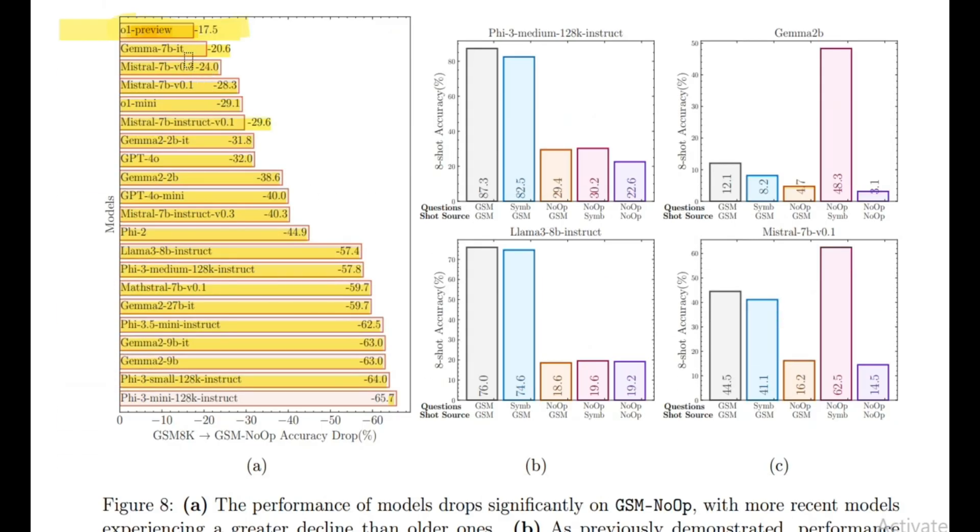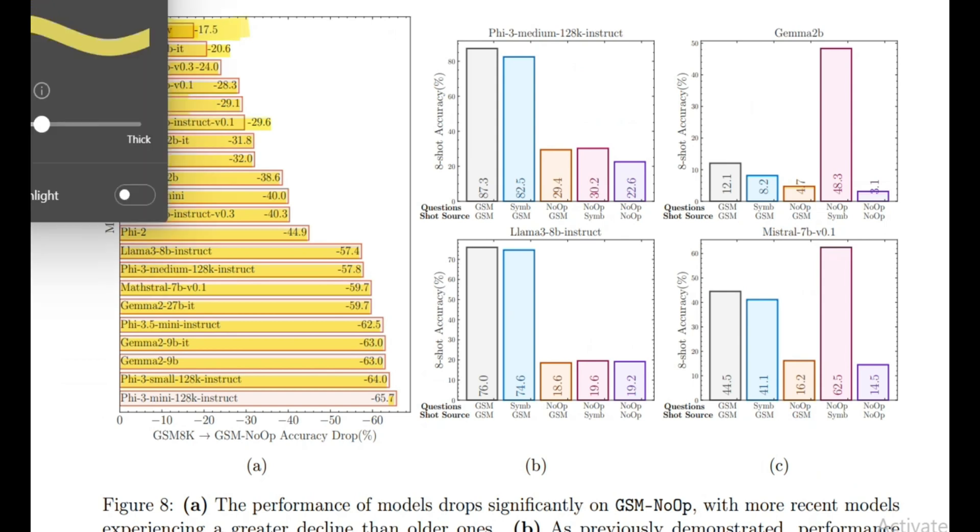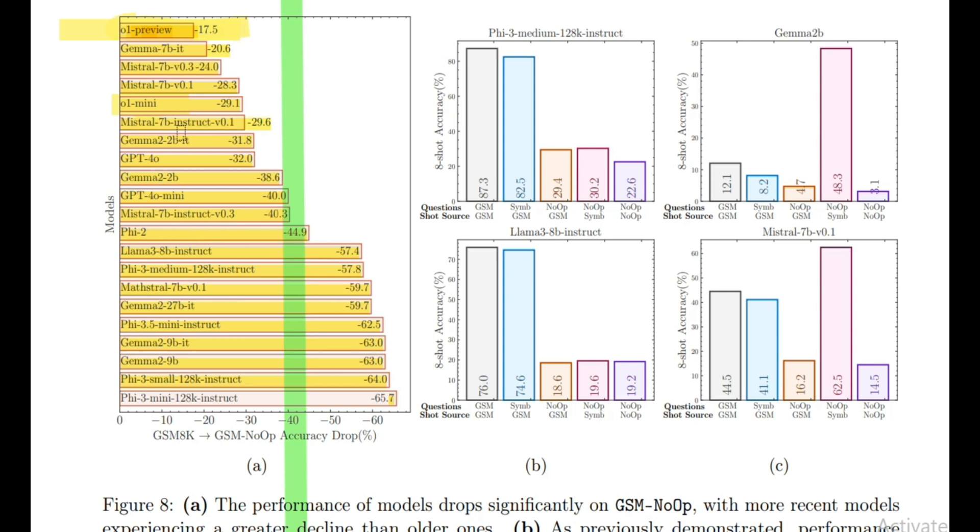And what's crazy about this is that we see a similar performance drop for GPT-40-01-mini. We can see 01-mini's drop is at 29%, and GPT-40's is at 32%. 01-preview does do better at 17.5%, but I wouldn't be expecting that big of a drop for a model that is specifically trained to reason. Okay? And we can see the other open source models here. You know, a lot of these other models are pretty smaller, but I am glad that they did include the 01 series of models, because that would have been a glaringly obvious thing to do, considering it's just trained on reasoning.